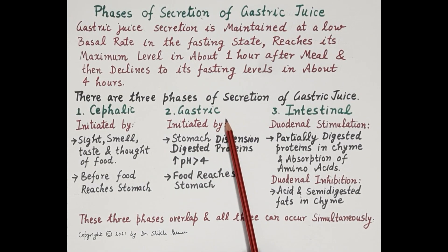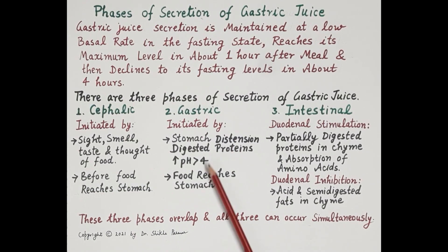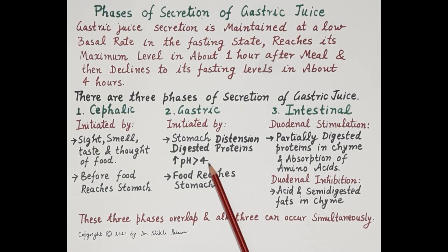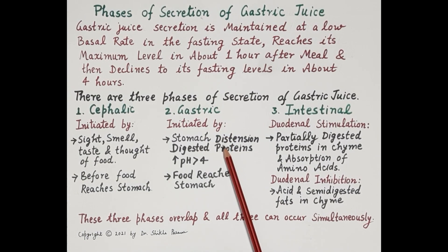During the gastric phase, around 60 percent of total gastric juice secretion occurs. As the ingested food reaches the stomach, there is distension of the stomach — the stomach wall stretches. Apart from this, digested proteins in the food and an increase in the pH of the stomach initiates the gastric phase of secretion.